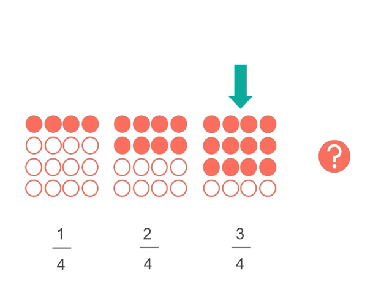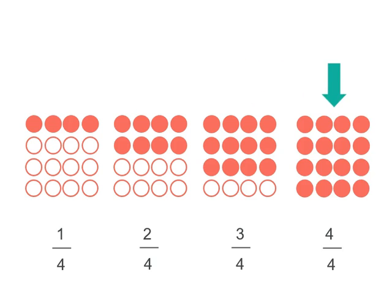3 shaded rows out of 4. So our final picture will have 4 rows out of 4, but our fraction will be 4 quarters.